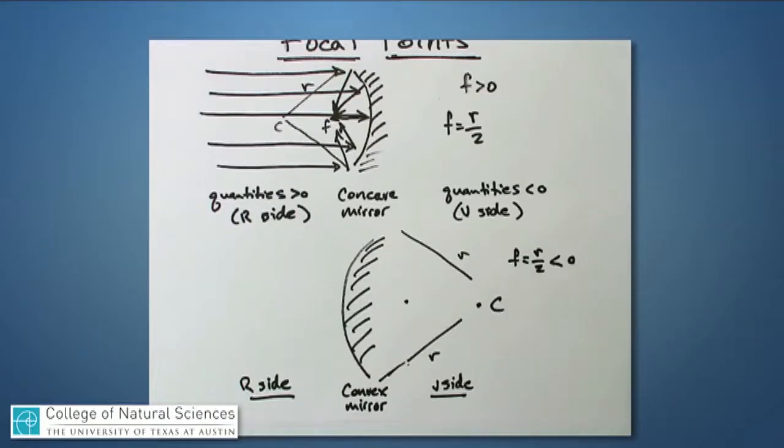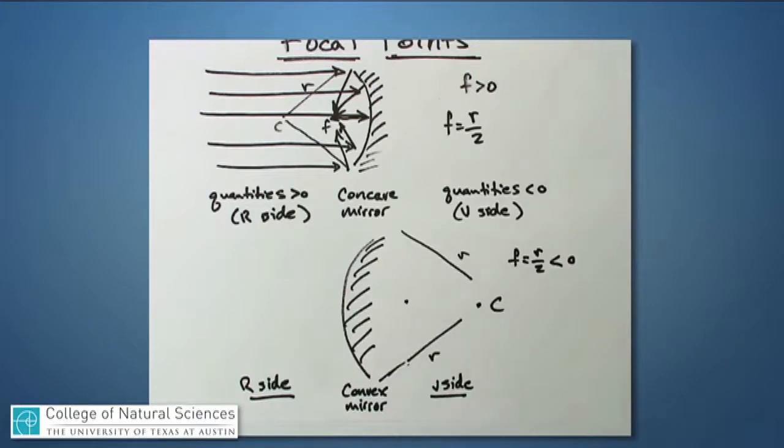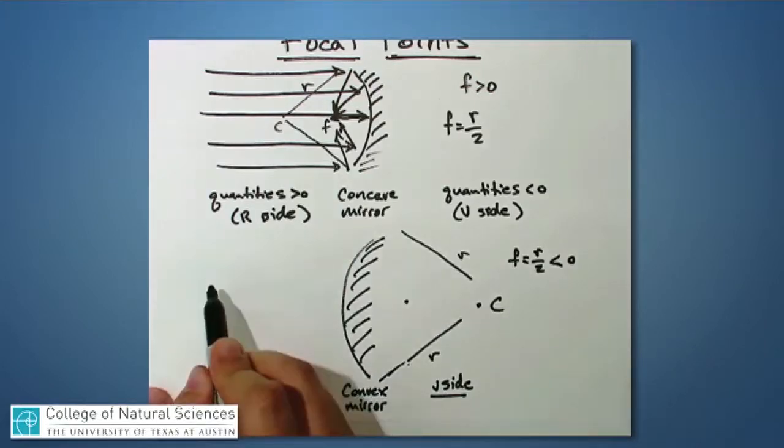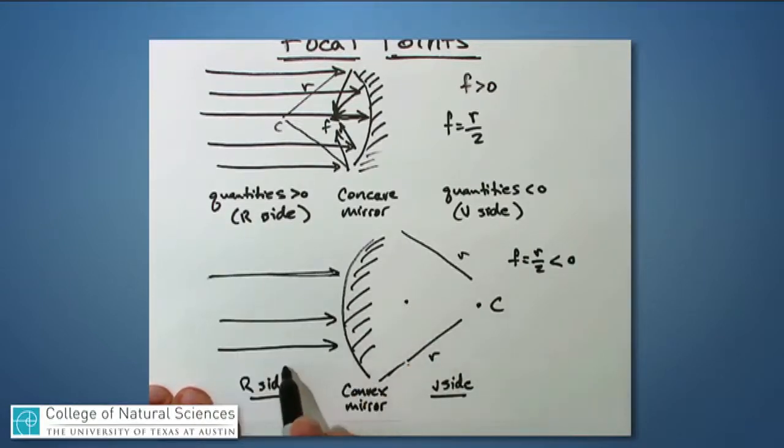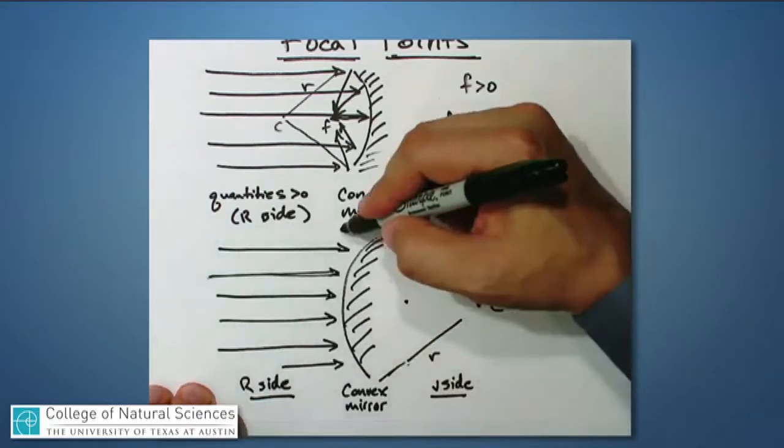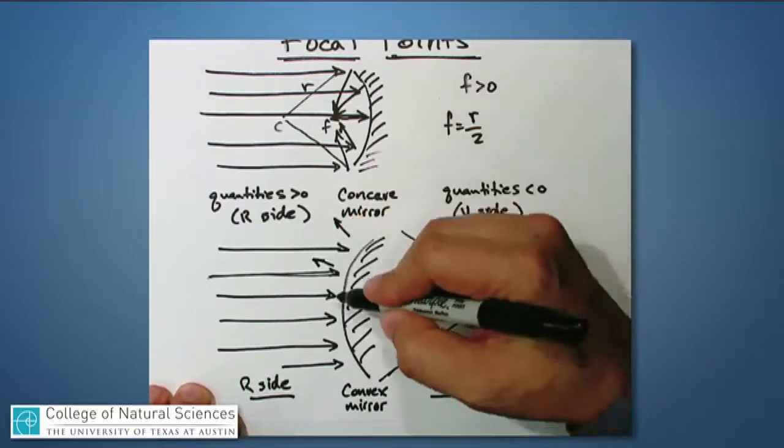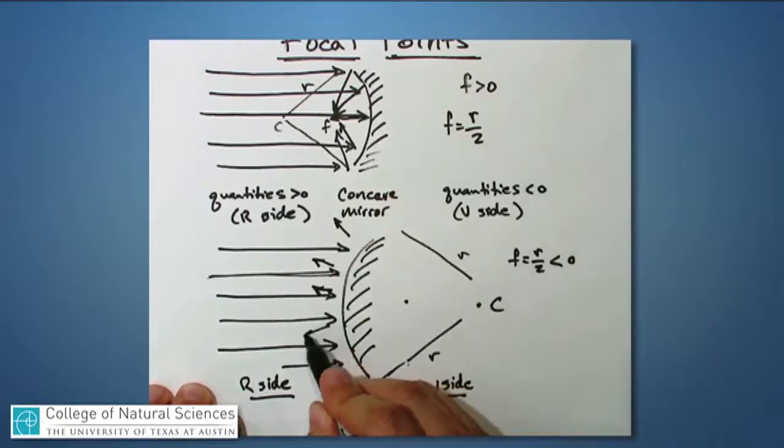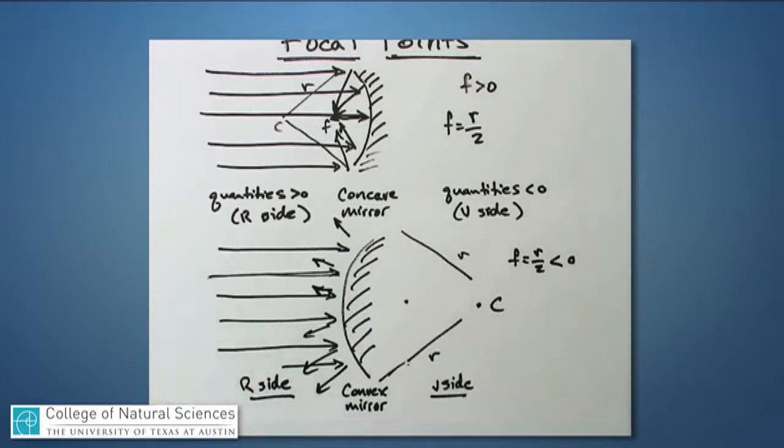Now what does focal length mean in this case? Because if I said before, the focal length is the point at which light would appear to converge if I bring in parallel light. Well, if I try to remember what happens to light rays coming into such a mirror here, they're all reflecting off. In other words, they never actually come to a point of focus anywhere along this mirror.